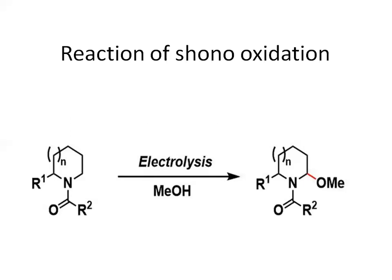In the Shono oxidation reaction, the reactant is an N-acyl amine. Under electrolysis in the presence of MeOH (methanol), the methoxy group (MeO) attacks the carbon atom. First, the electrolysis reaction converts N-acyl amine to the iminium ion. After that, MeOH is added, and after addition of methanol, we finally get a compound in which the methanol group is added.